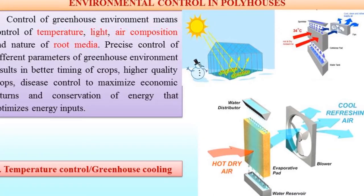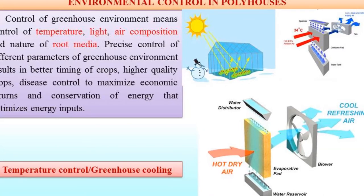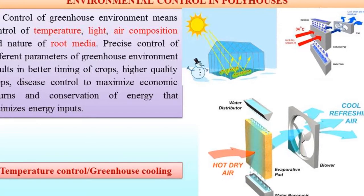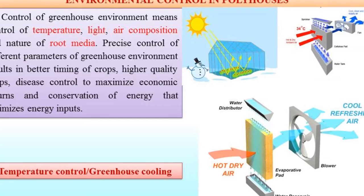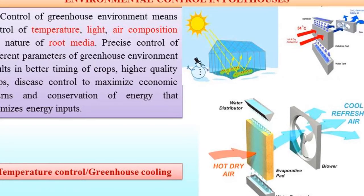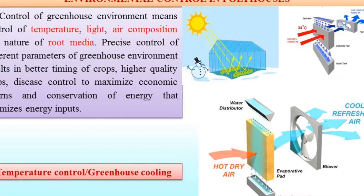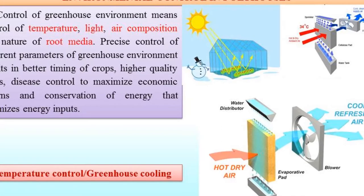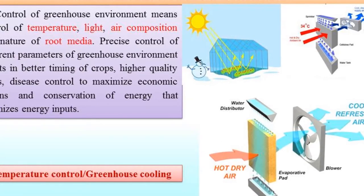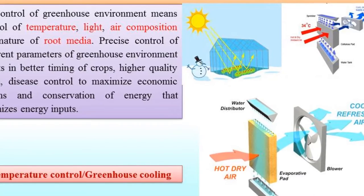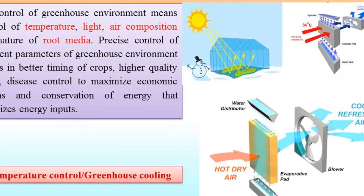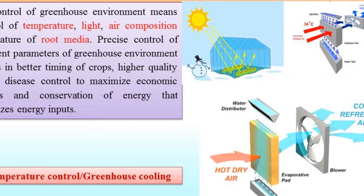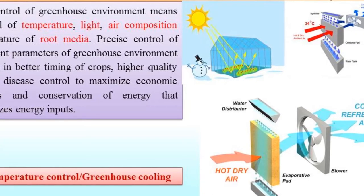We know that for optimum growth and optimum yield, it is essential to control some environmental factors inside the polyhouse. Control of greenhouse environment means control of environmental factors such as temperature, light, air composition, and nature of root media. Controlling these parameters helps to maximize economic returns and conservation of energy that optimizes energy inputs.